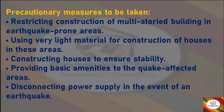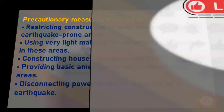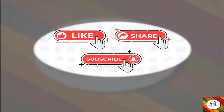The precautionary measures to be taken are: restricting construction of multi-storey buildings in earthquake-prone areas; using very light material for construction of houses in these areas; constructing houses to ensure stability; providing basic amenities to quake-affected areas; and disconnecting power supply in the event of an earthquake. With this we come to an end with the question and answer session of this chapter.